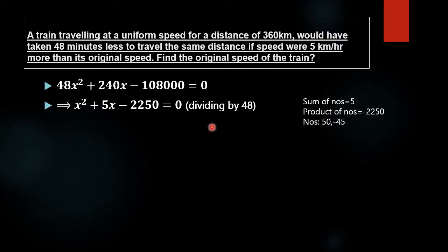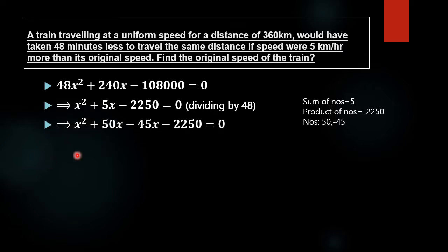Note that here the sum of numbers equals 5 and the product of numbers equals minus 2250. We are going to use splitting the middle term to solve this quadratic equation. You can also solve it more easily by the factorization method, but here the splitting the middle term method is used. The numbers whose product is minus 2250 and whose sum is 5 are 50 and minus 45. That is, 50 plus minus 45 equals 5, and 50 multiplied by minus 45 equals minus 2250. These numbers are used to split the middle term 5x.